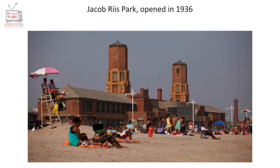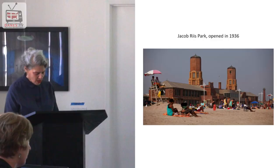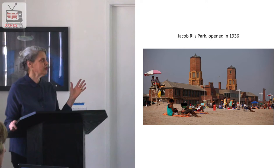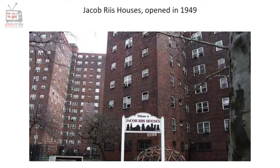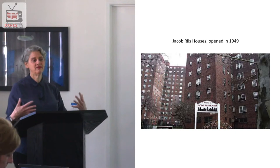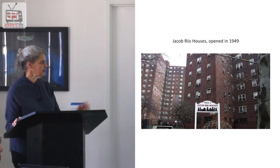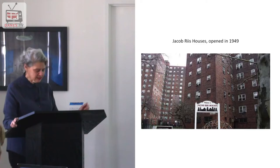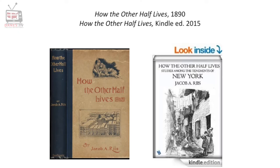Today most New Yorkers know his name because of two things: one is a waterside park in Queens which opened in 1936 — this is a picture of the park now, with an old art deco bathhouse that has been fairly recently renovated. The next thing named for Riis in New York is a low-income housing project which opened in 1949. The reformers of the Depression era read 'How the Other Half Lives' and found great inspiration in it, reviving interest in him, which is why those institutions were named for him.